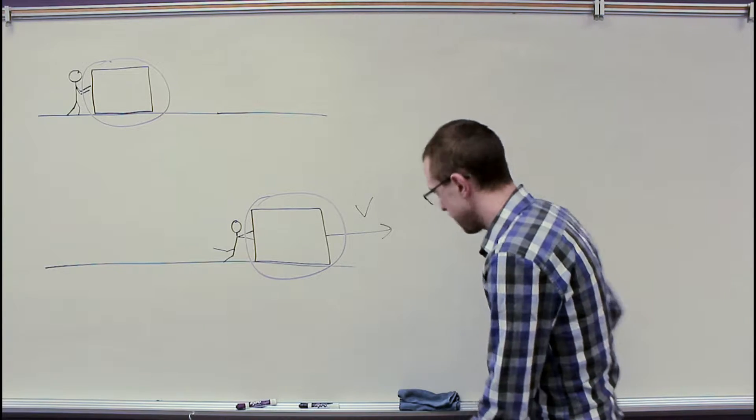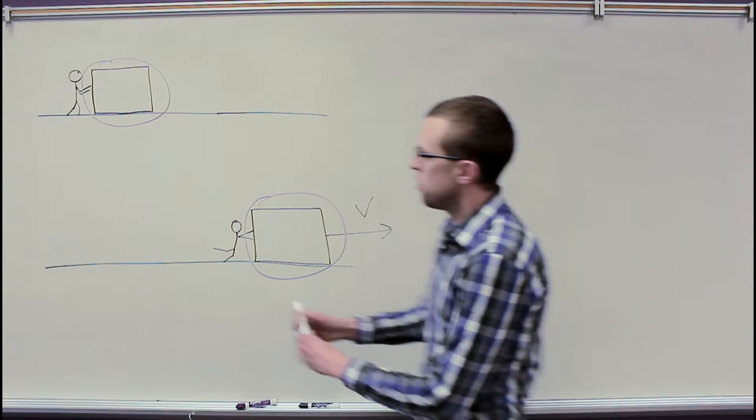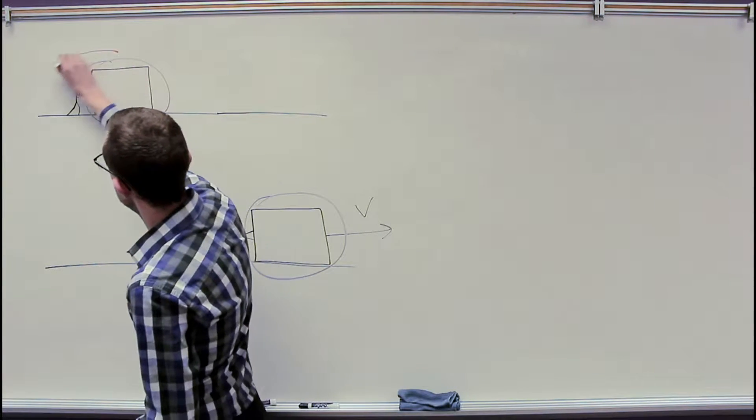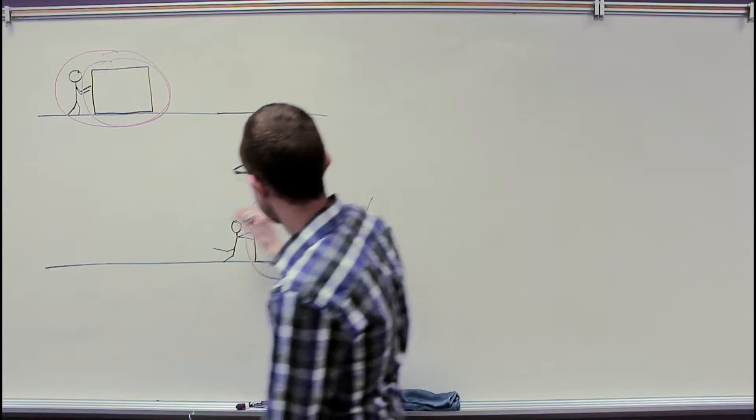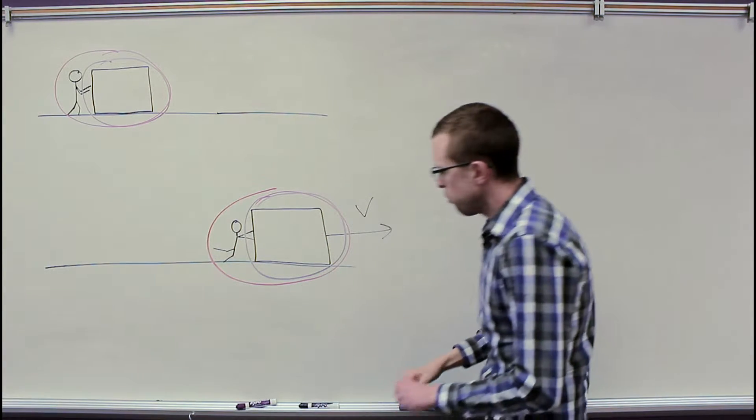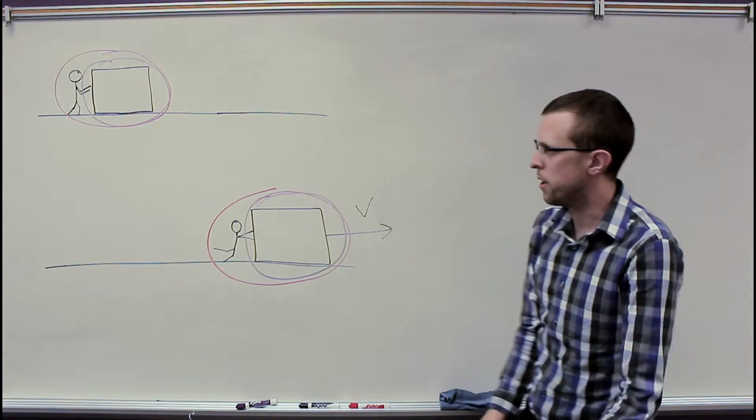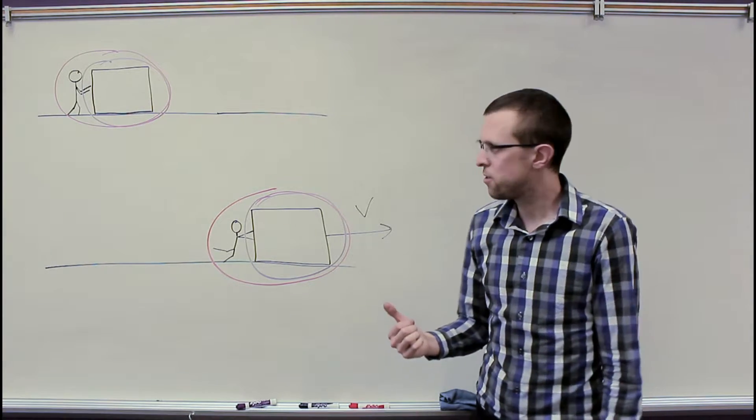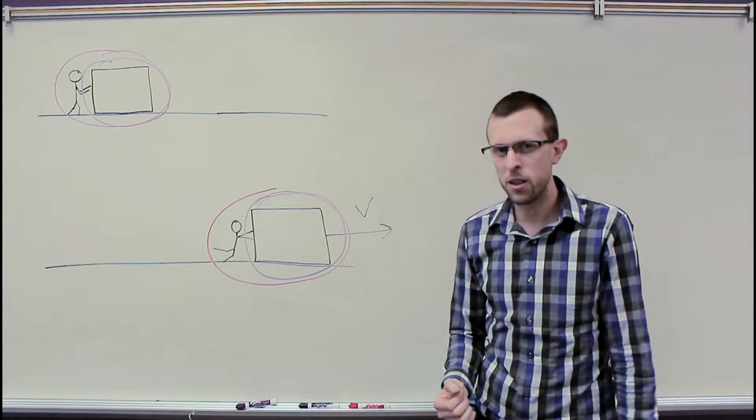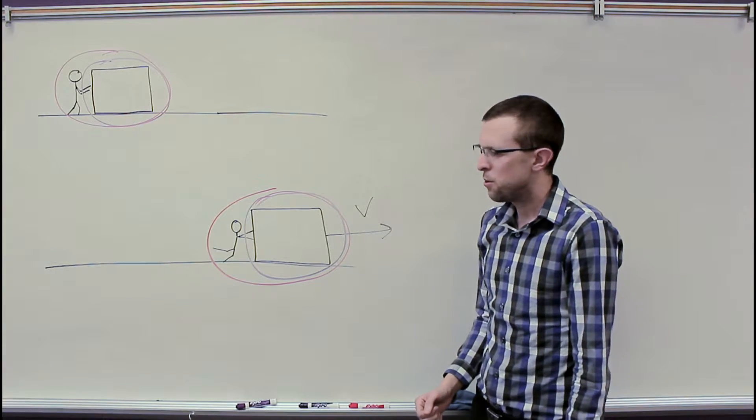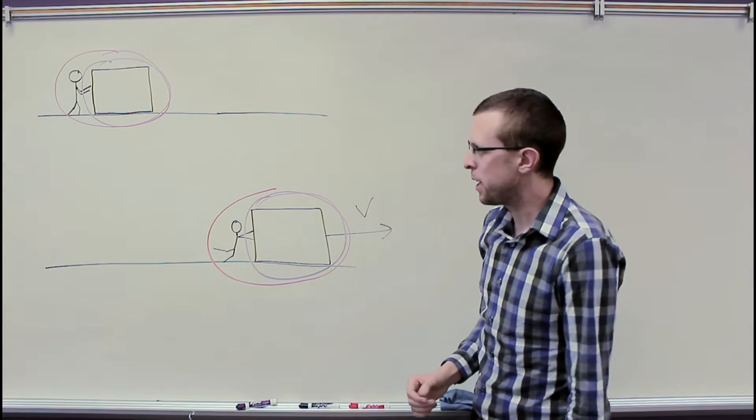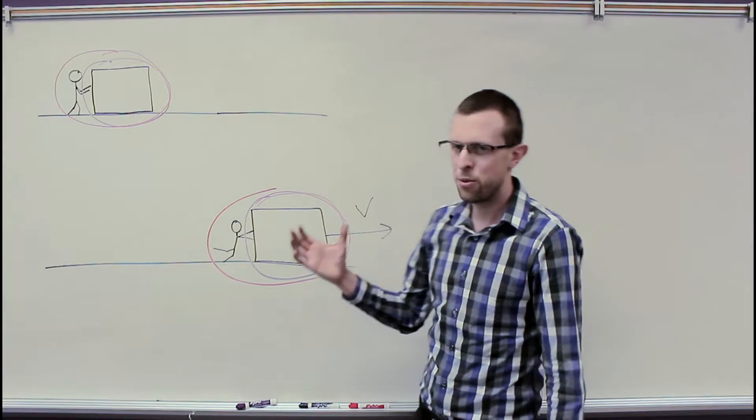Now, if we changed our system, and instead of this purple circle for our system, if we included the person and the box, we've got a little bit different picture here. We do have still friction doing work on the system, but in sort of a complicated way now.